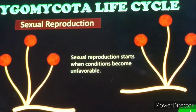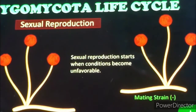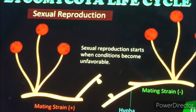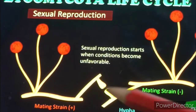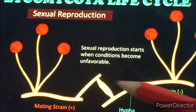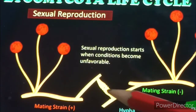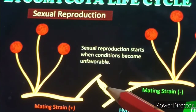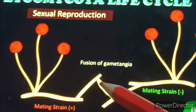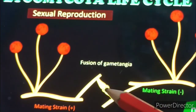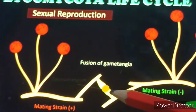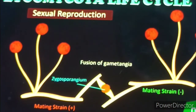Now this shows the sexual reproduction of Zygomycota. In sexual reproduction, you will see the mating of plus and minus strands. The red-labeled one is plus and the other is minus. These two unite — this happens under unfavorable conditions. After uniting, growth is visible in the middle. This is the fusion of gametangia. Both negative and positive strands merge, growth starts, the color becomes yellowish, and a zygosporangium is formed.